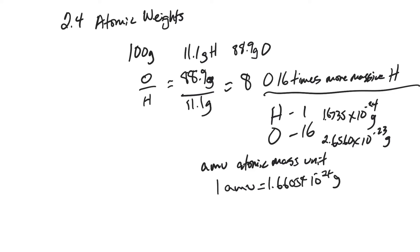So instead of using grams, which would be all these awful numbers, tiny little awful numbers, you're just going to use 1 amu in that place. So you would say that hydrogen would be 1 amu and oxygen would be 16 amus.